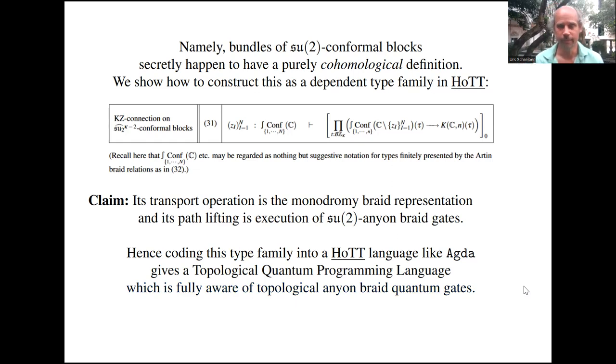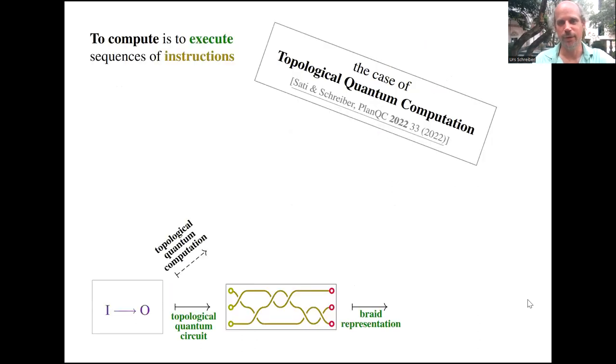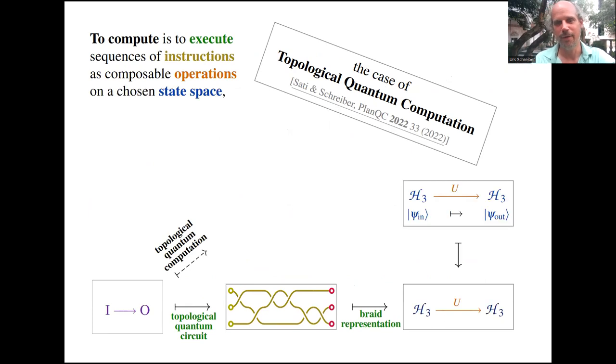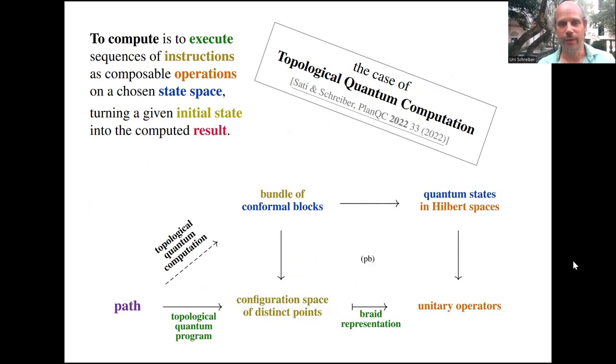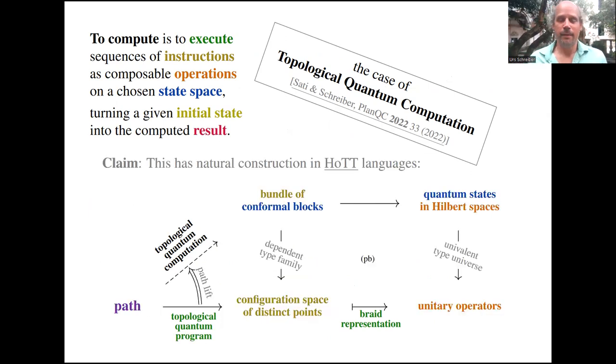So that's the first punchline I have to offer. Now time permits, I have a few additional remarks to make. Maybe just first a little summary of what we just said. In this picture, topological quantum circuit evaluation means to take a path in the delooped braid group, which is a braid, lifted up through this type family of conformal blocks, where it becomes an actual unitary operation. The point is that this type family of conformal blocks can actually be constructed in the homotopy type theoretic language.